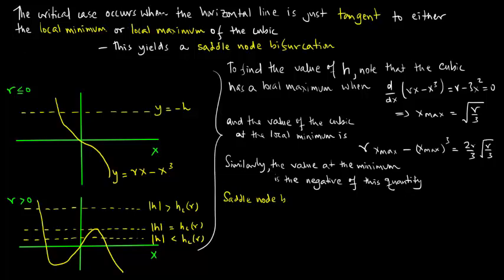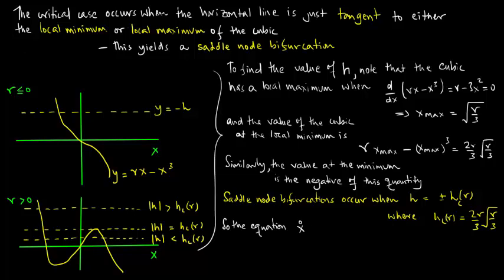Similarly, the value at the minimum is the negative of this quantity. Saddle node bifurcations occur when h equals plus or minus h_critical, which is a function of r, where h_critical equals 2r by 3 times the square root of r by 3.